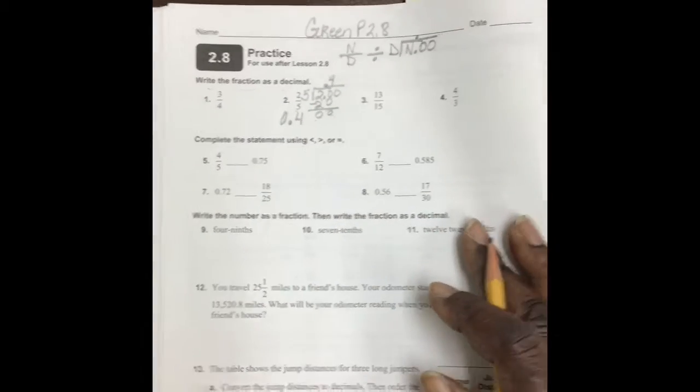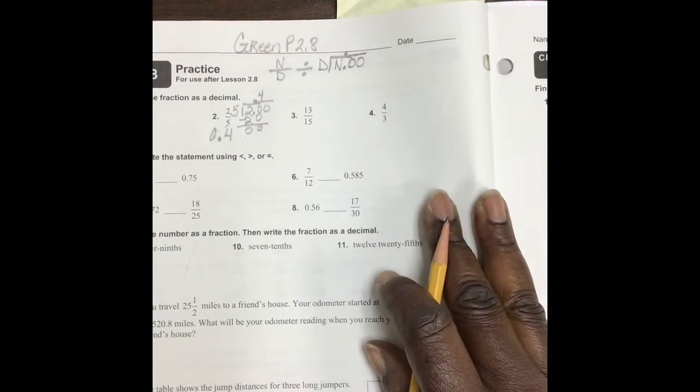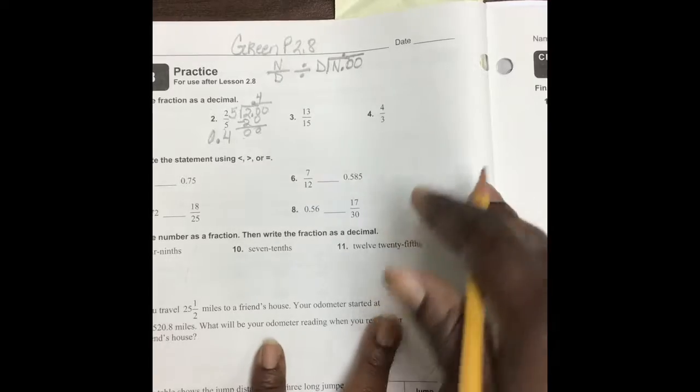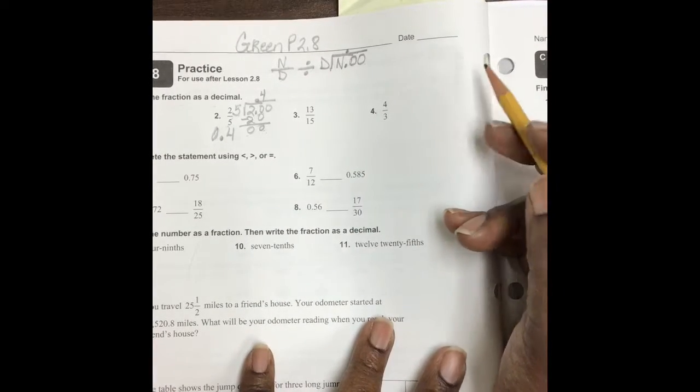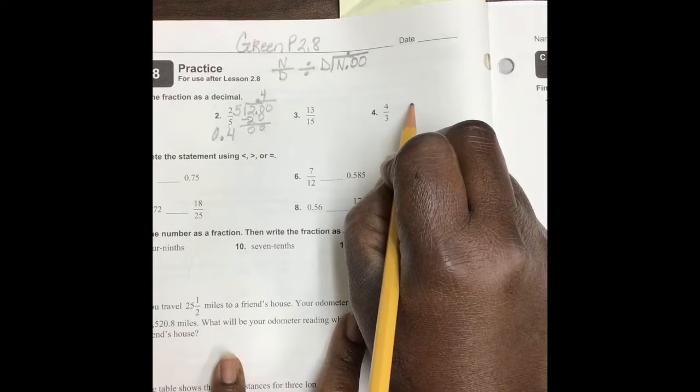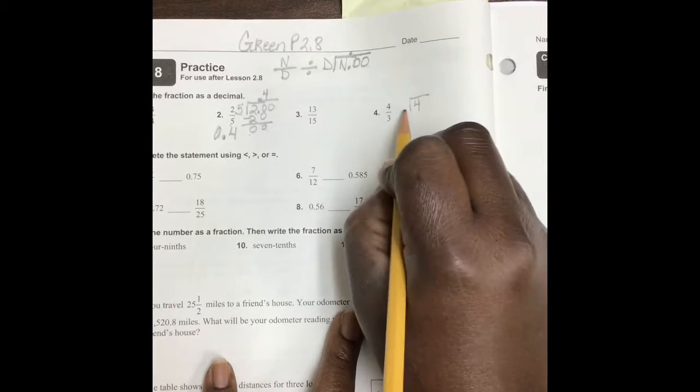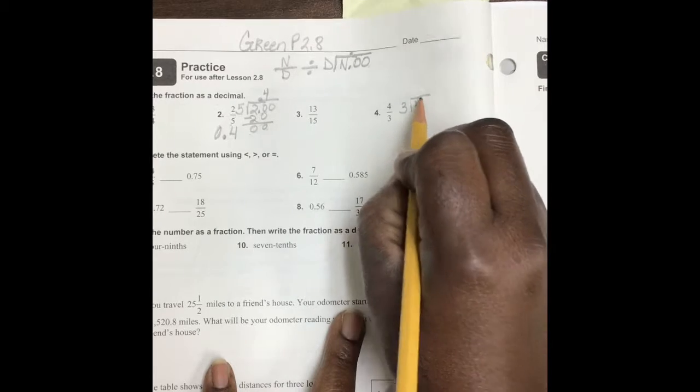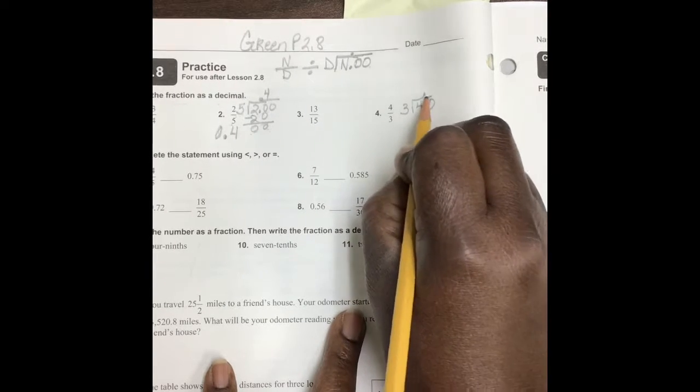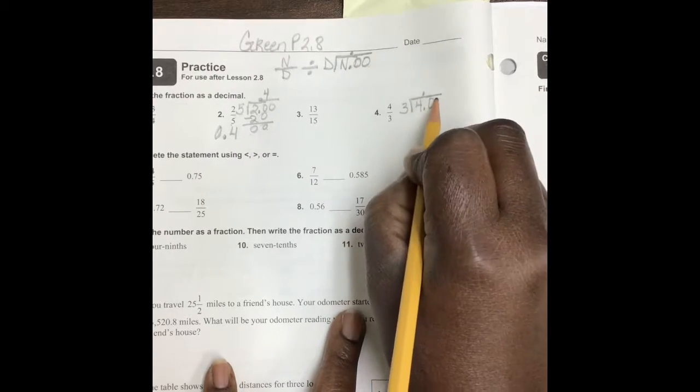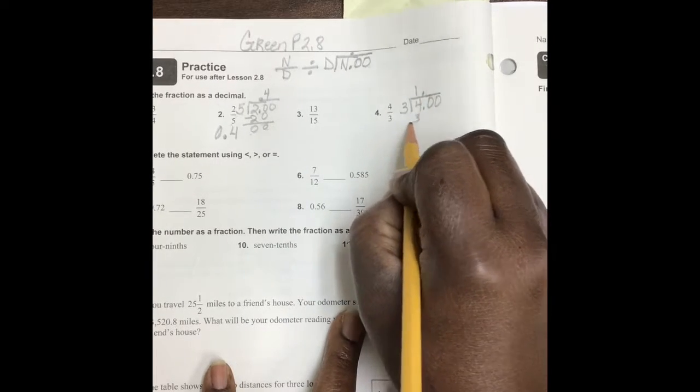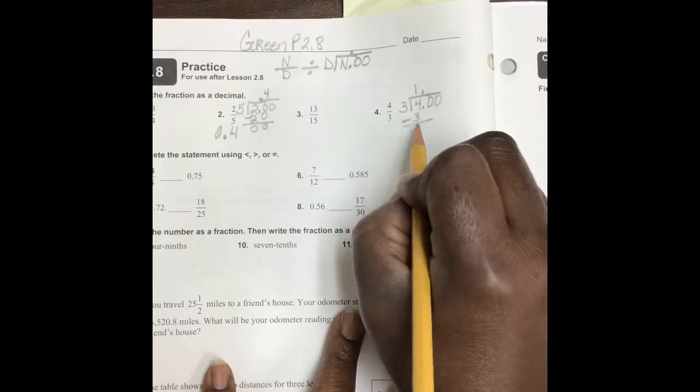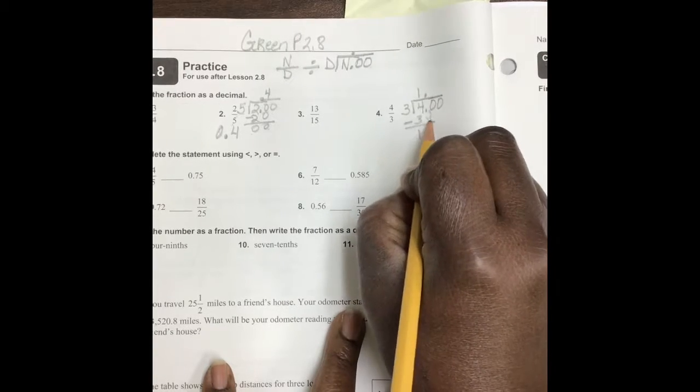Let's look at number 4. We notice that our numerator is larger than our denominator. But still, we continue. Numerator divided by our denominator. Place our zeros. And let's begin. How many threes are in 4? 1. 4 minus 3 is 1. Bring down our zero.